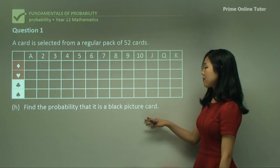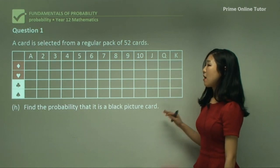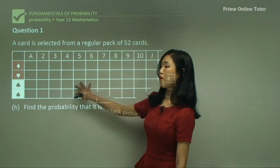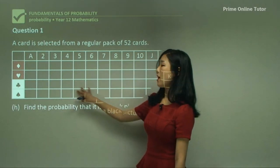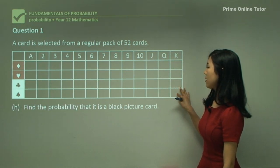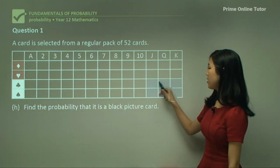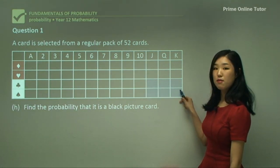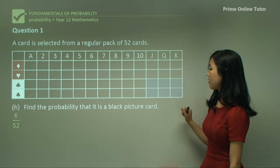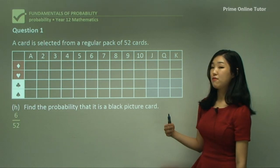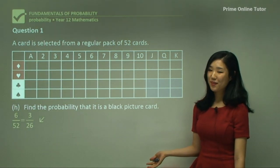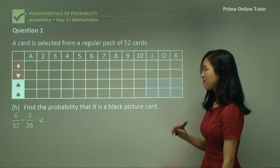Question 1H: find the probability that the card is a black picture card. Black cards are the bottom two rows, and picture cards are these three columns — Jack, Queen, King. So we want this intersection. Counting those blocks gives us 6. So it's 6 out of 52, simplified to 3 over 26.